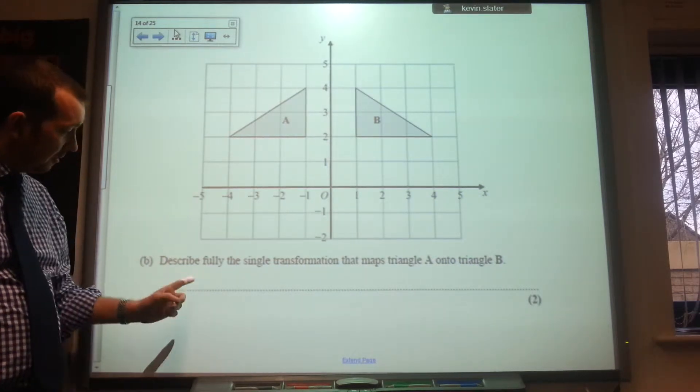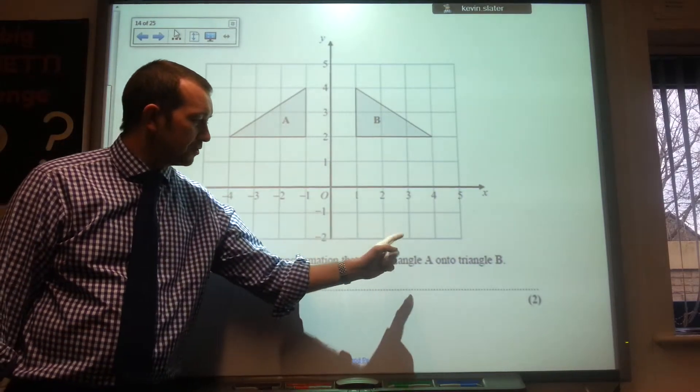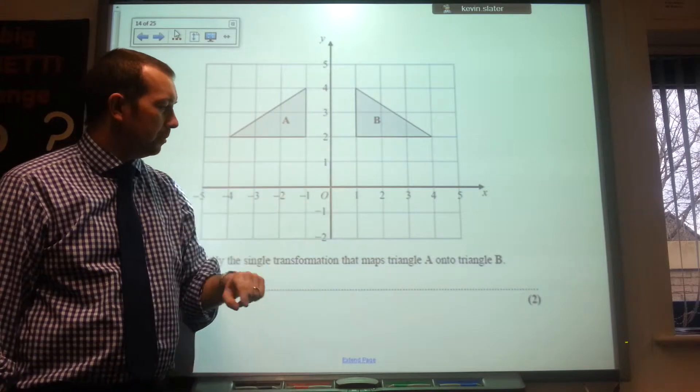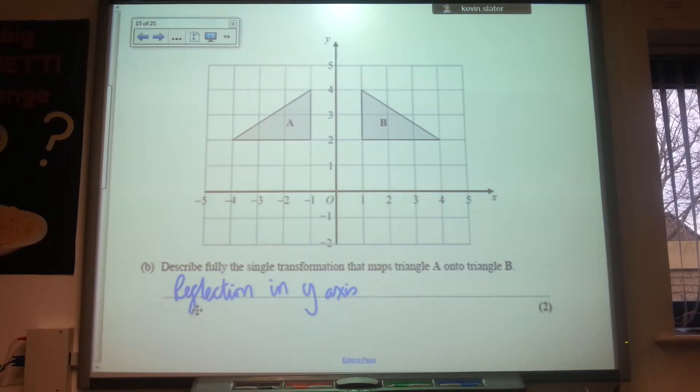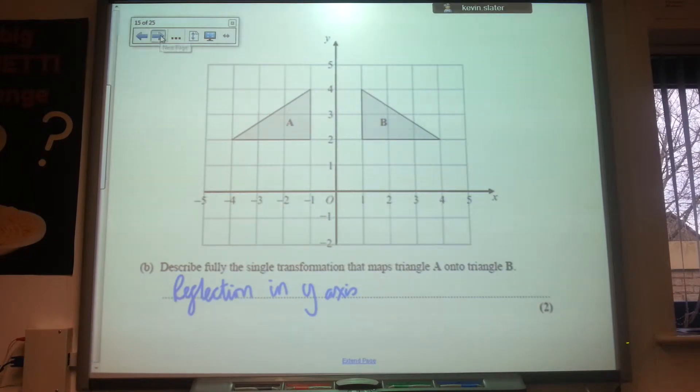So this one says, describe fully the single transformation that matched triangle A onto triangle B for two marks. And there's your answer there, reflection in the y-axis. So that's there for two marks. That's a reflection in the y-axis. Next one.